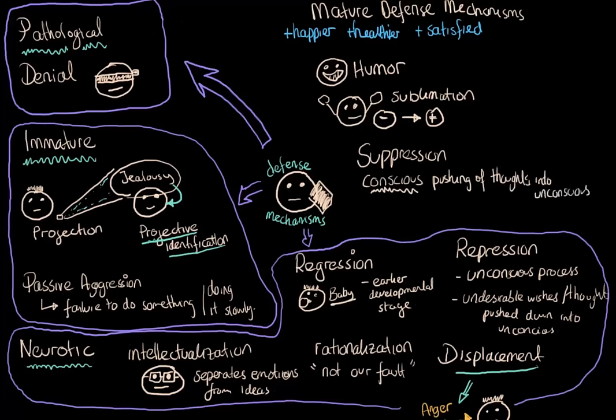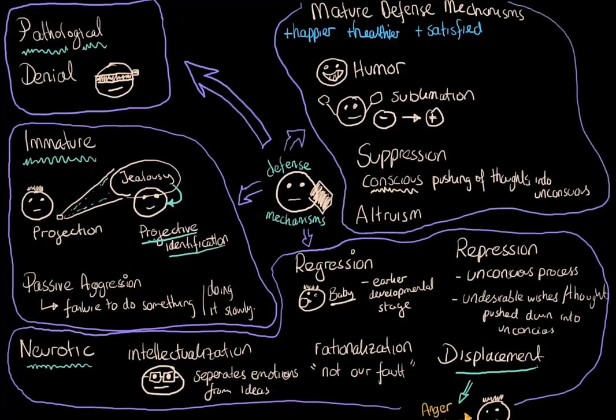Finally, I want to mention one last defense mechanism, which is altruism, which is basically when we are in the service of other people, we actually feel very fulfilled and gain pleasure and satisfaction. So these categories are the mature defense mechanisms. There's certainly a lot of defense mechanisms here, and it's important to know that this is by no means exhaustive.